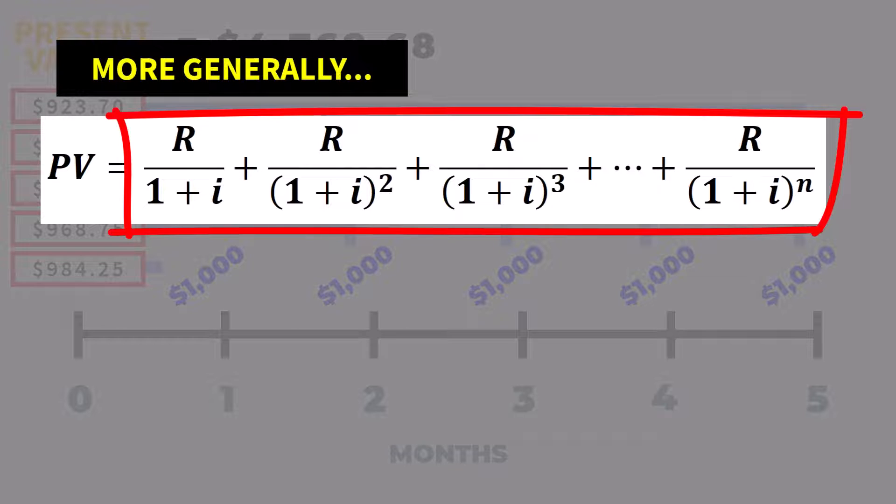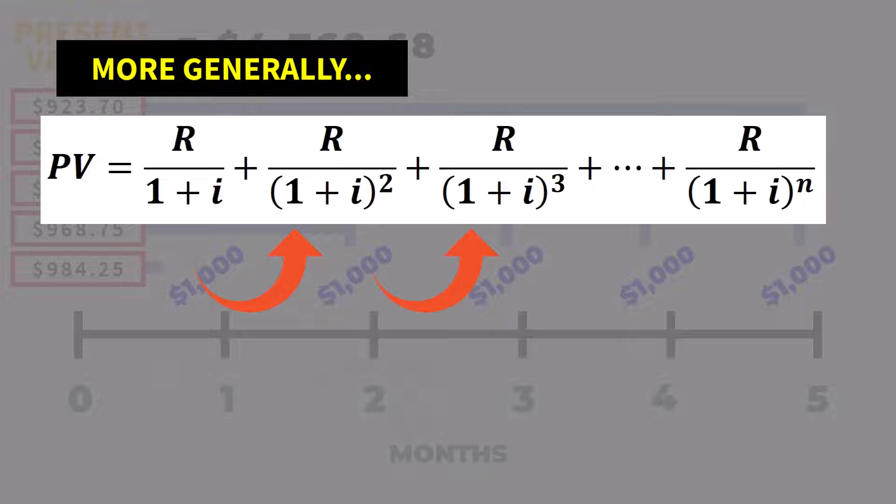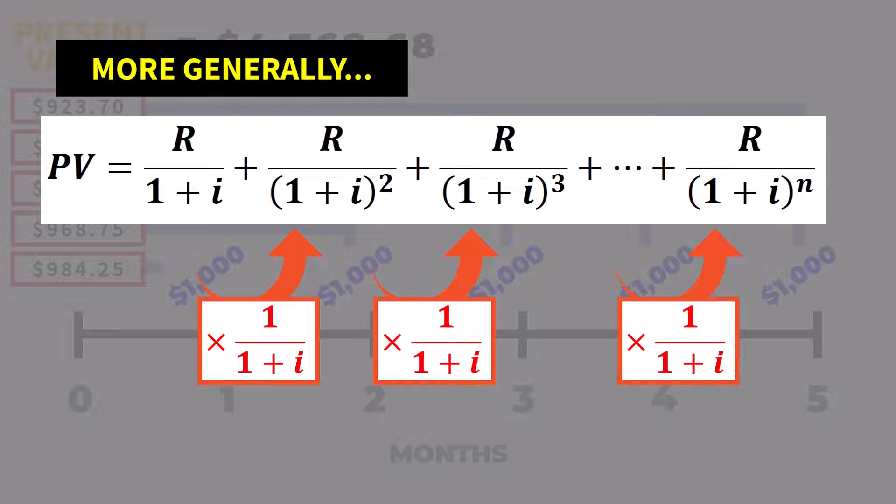Notice how this part of the equation is a geometric progression series, meaning that each subsequent term following the first is obtained by multiplying it by a common factor. The common factor here is 1 over 1 plus I. Note that I represents the interest rate per period.